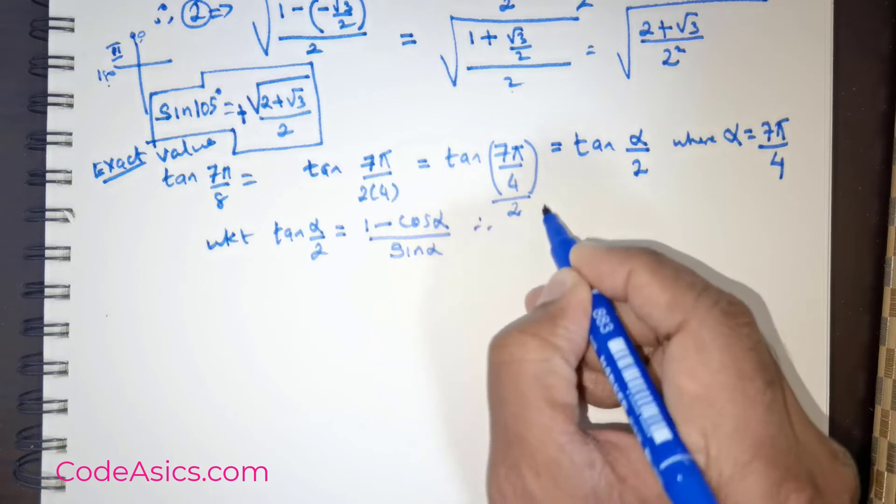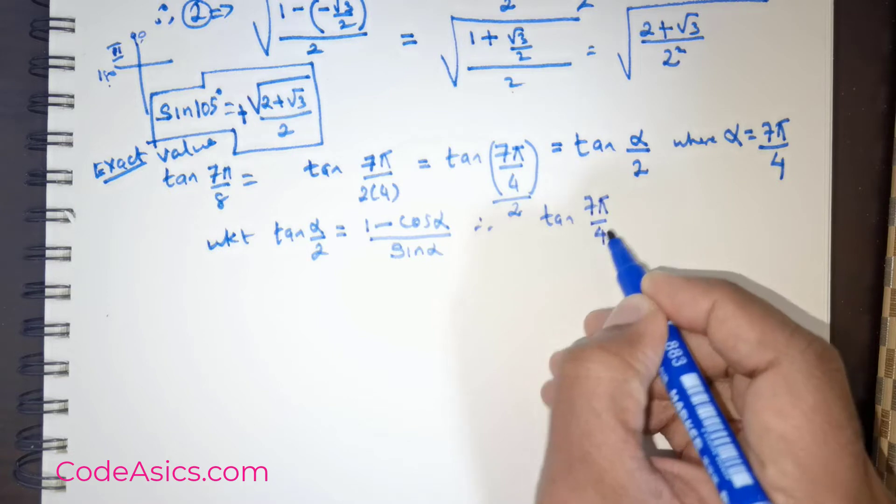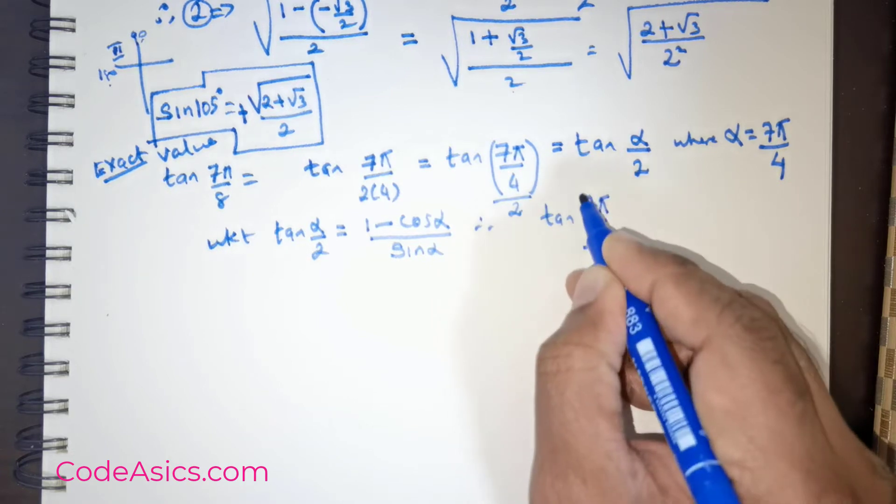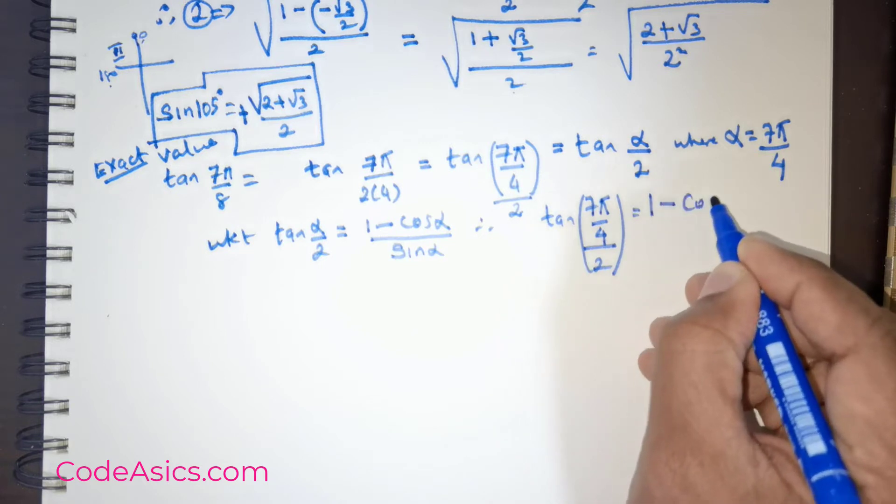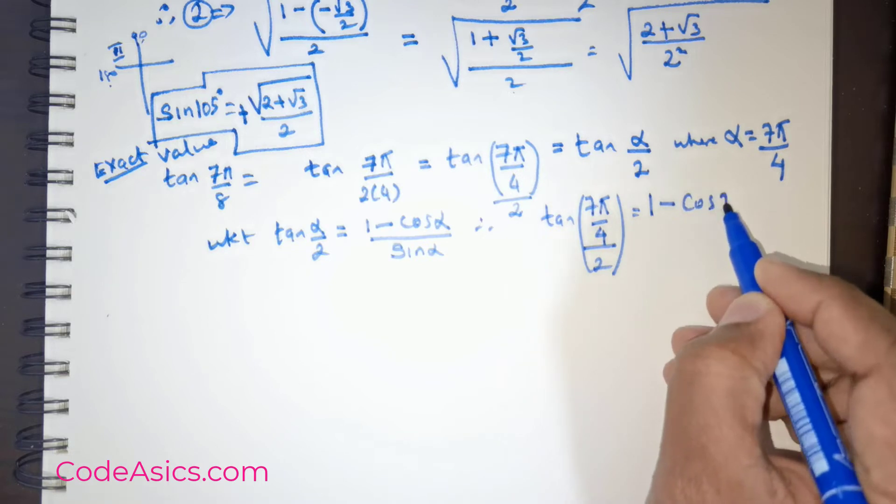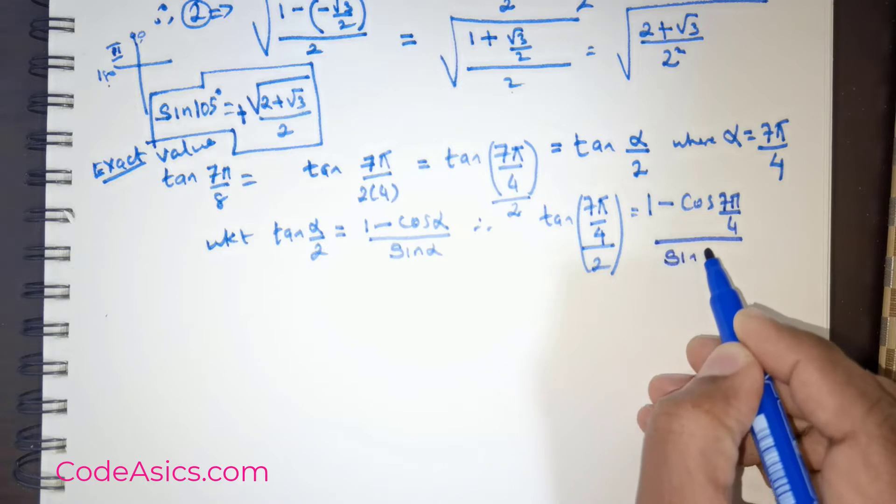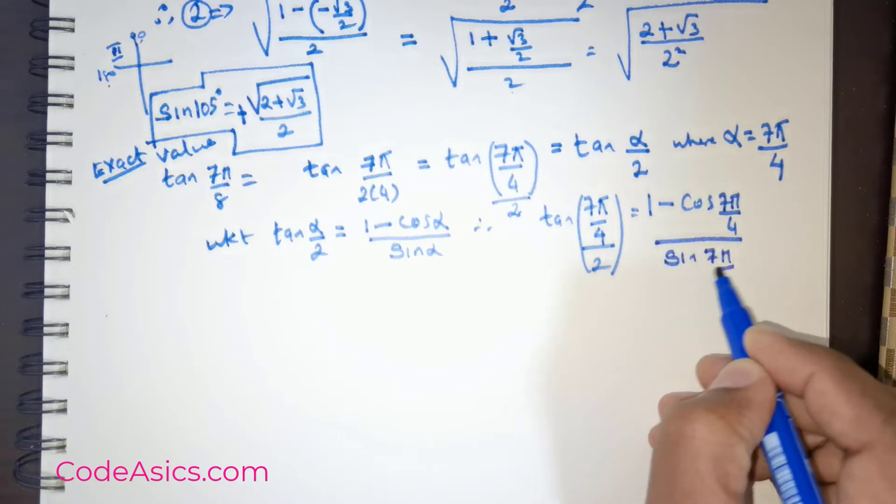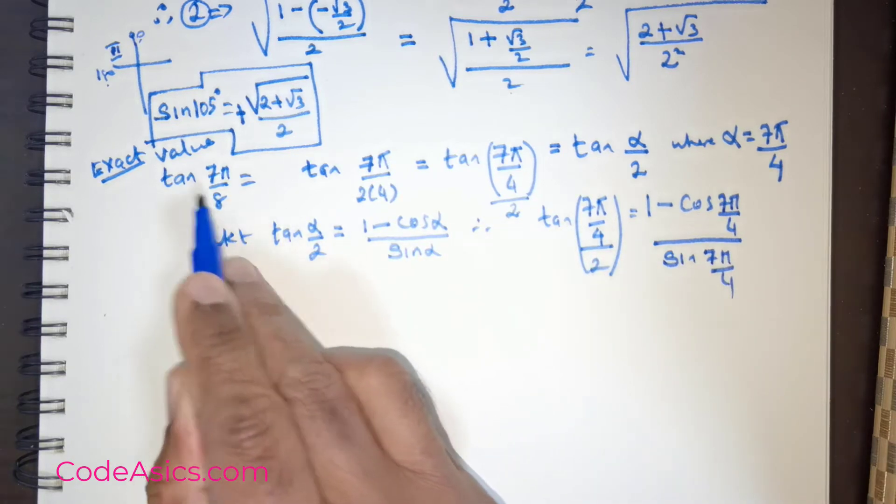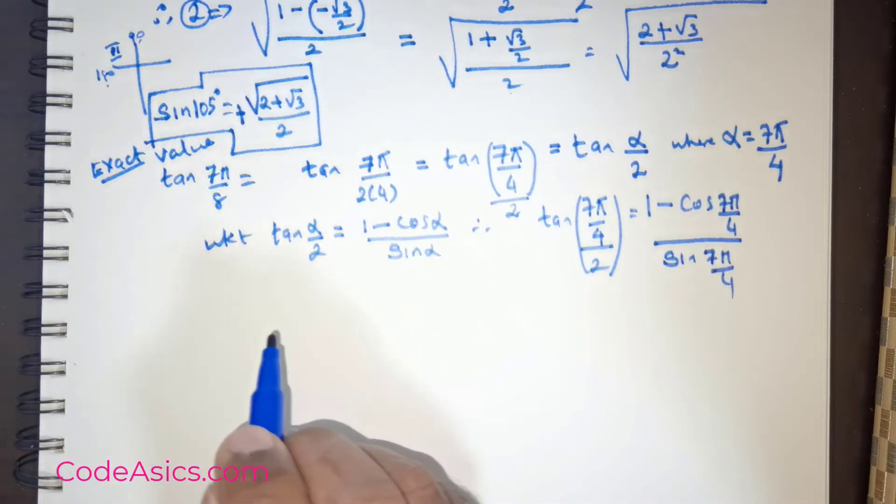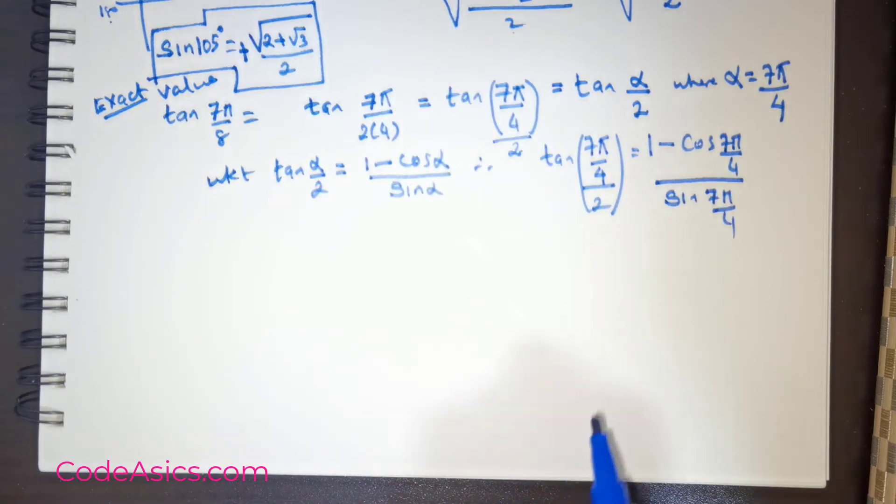Therefore, tan 7π/4 divided by 2 equals 1 minus cos 7π/4 divided by sin 7π/4. If you can get this value, you have completed the solution for this particular question. Now the important challenge is, what is cos 7π/4?